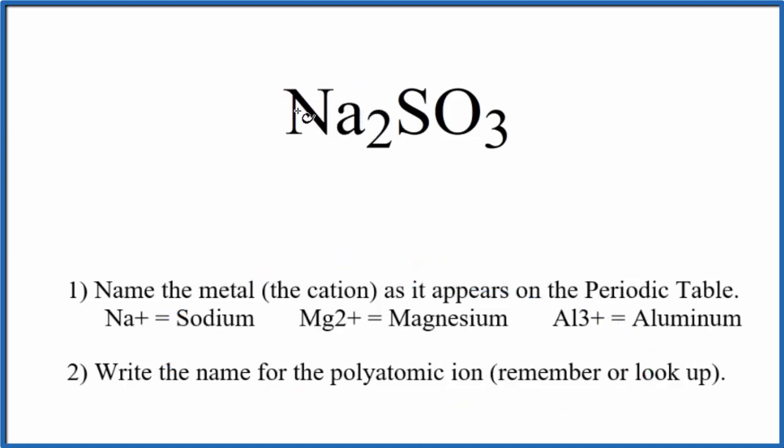First we write the name of the metal, that's the sodium. Next we write the name of the polyatomic ion, that's SO3, the sulfite ion, and the name for Na2SO3 is just sodium sulfite.